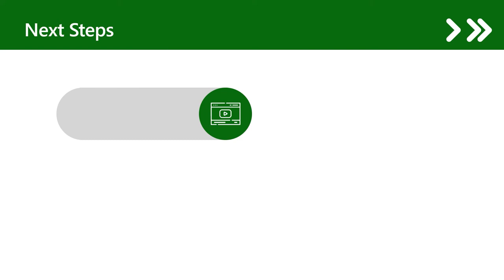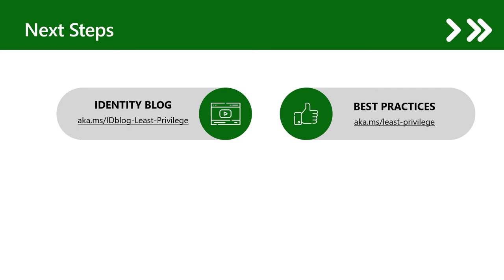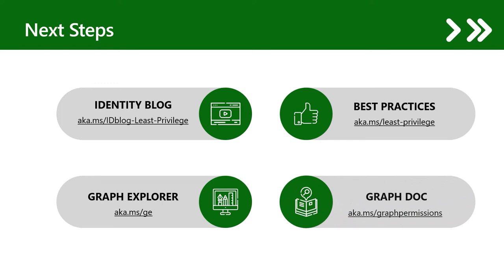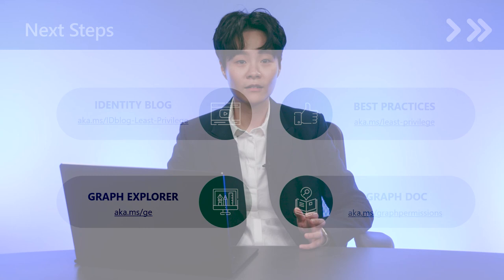Finally, we have four major useful resources that could help you adopt the least-privilege principle. First, the identity blog has more detailed content on what we covered today. Second, we have posted best practice guidance on configuring your permissions within the Microsoft Identity Platform documentation. Using our Graph Explorer and Microsoft Graph documentation, you can determine the Microsoft Graph API calls you need to make to enable your app scenario, then find the corresponding permissions from least to most privilege. Thanks for watching this video, and I will see you next time.